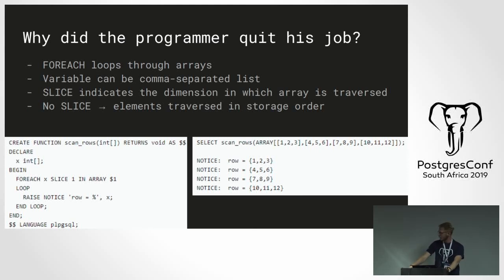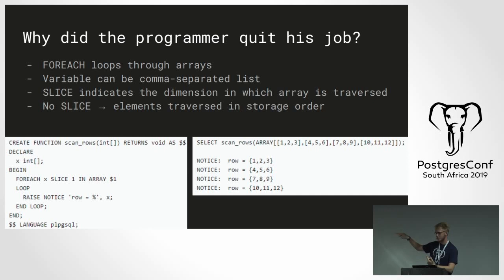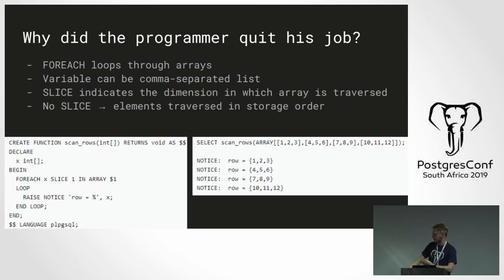You can also loop through arrays. The variables can be comma-separated lists, and each variable will be assigned the corresponding value when looping through the array. The SLICE clause doesn't indicate the amount of values you want in each loop, but the dimension of the array you're looping through — we can have multidimensional arrays, and SLICE 1 indicates we want the first dimension. If you don't add a SLICE, it will loop through each element individually. So without a slice, instead of row equaling {1,2,3}, it will be rows of 1, then 2, then 3, then 4 — leading to 12 iterations instead of four.